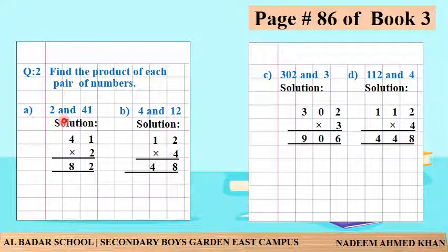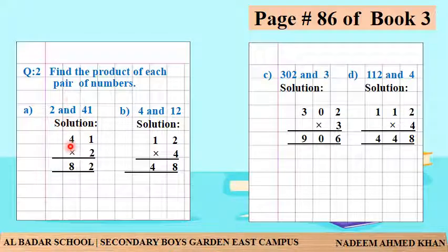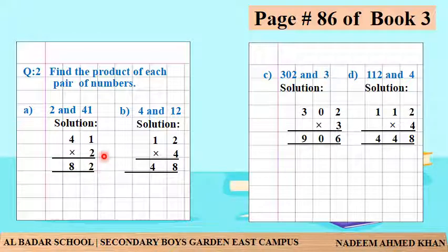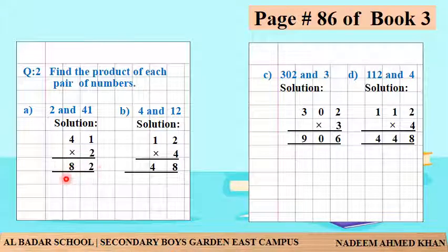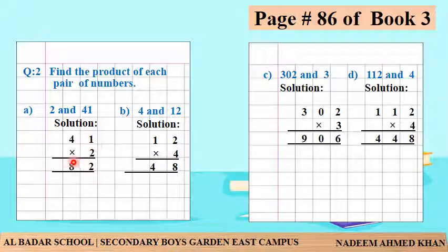A question: two and 41. We have to find this product. You can write 41, then multiply by 2, then draw the line. Now using the 2 times table: 2 multiplied by 1 is equal to 2, 2 multiplied by 4 is equal to 8 - so 82. The product of 2 and 41 is 82, and this is the answer. B question is 4 and 12.